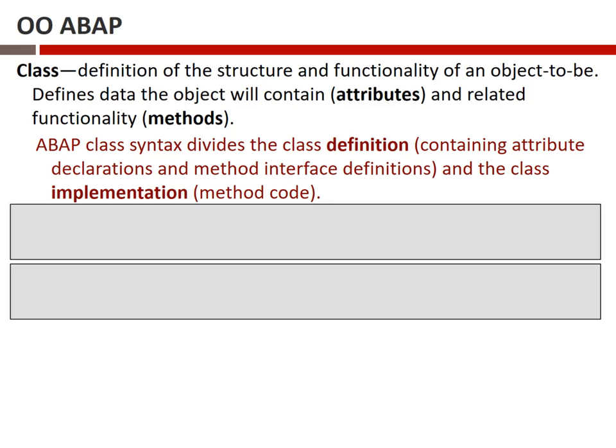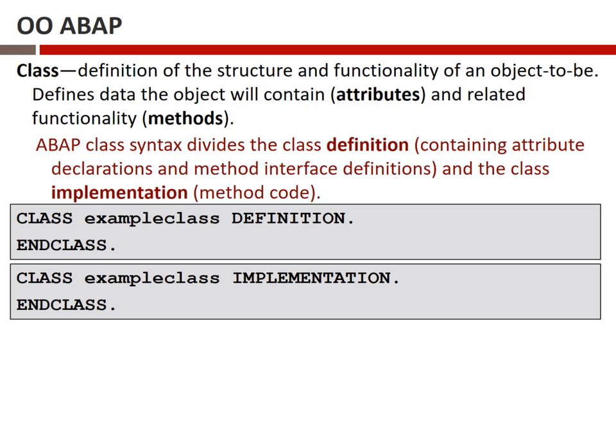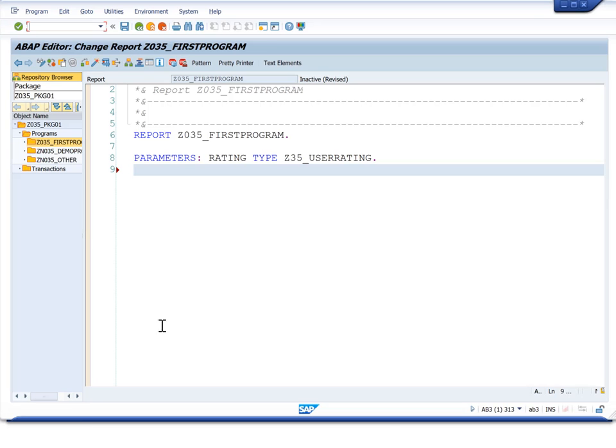We have one part of the class that indicates what the parameter passing is for the various methods and what methods exist, and then we have the implementation that gives the actual code for each method. In every object-oriented program you'll see two distinct blocks: the keyword CLASS, the name of the class, then the keyword DEFINITION with an ENDCLASS statement to close it; and then the CLASS IMPLEMENTATION block. Let's go to our ABAP editor and start writing some code.